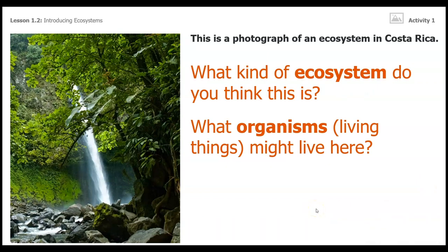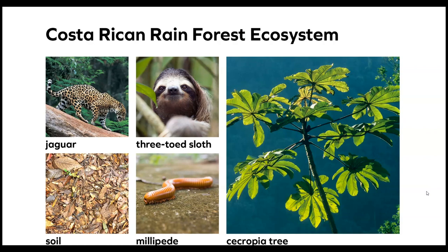This is a photograph of an ecosystem in Costa Rica. What kind of ecosystem do you think this is? What organisms — living things — might live here? This is a photo of the Costa Rican rainforest ecosystem, and here are some of the organisms that live there: the Cecropia tree, millipede, three-toed sloth, soil and jaguars. In Spanish, jaguar is pronounced 'jaguare' — it's a beautiful word.